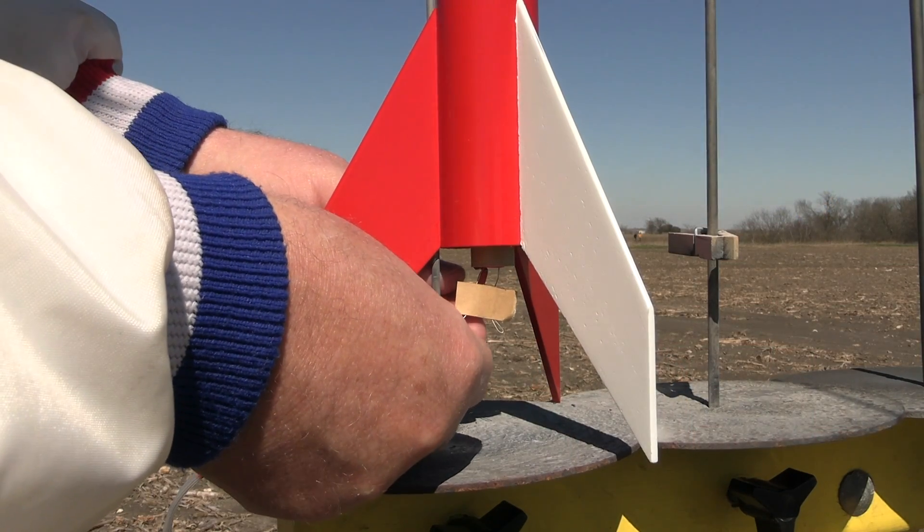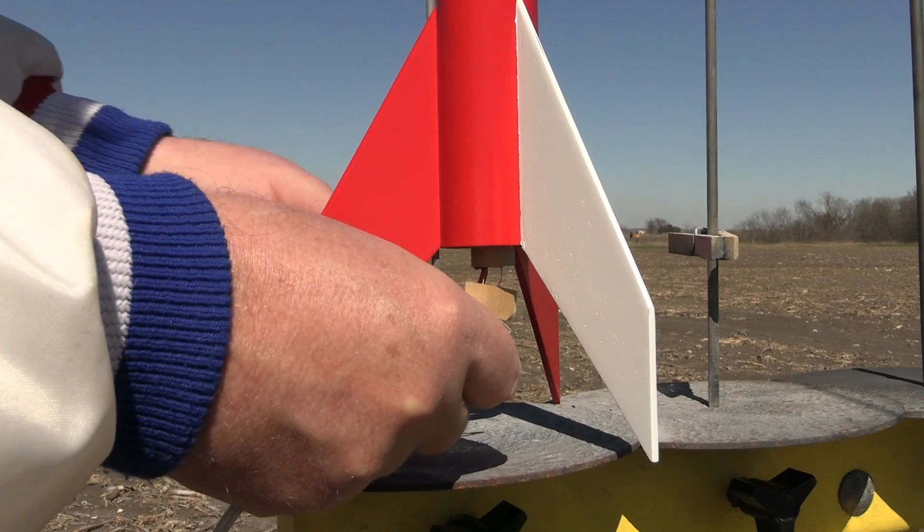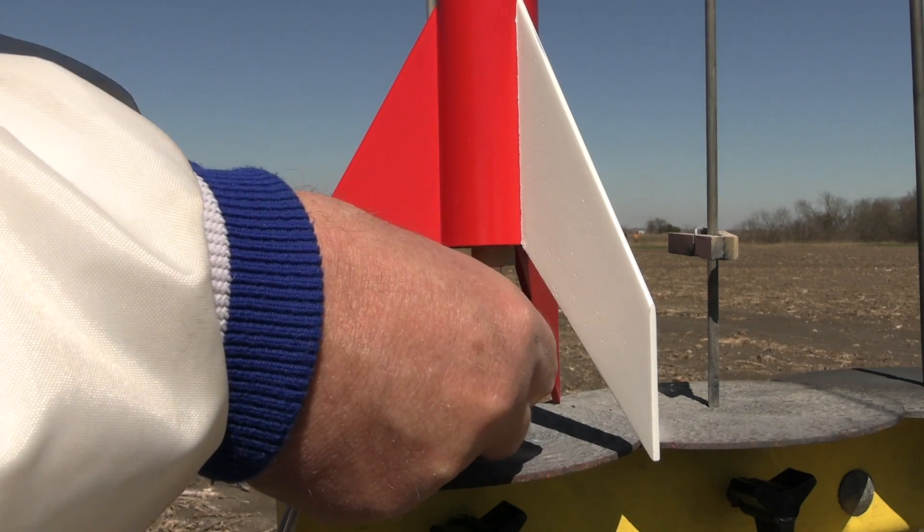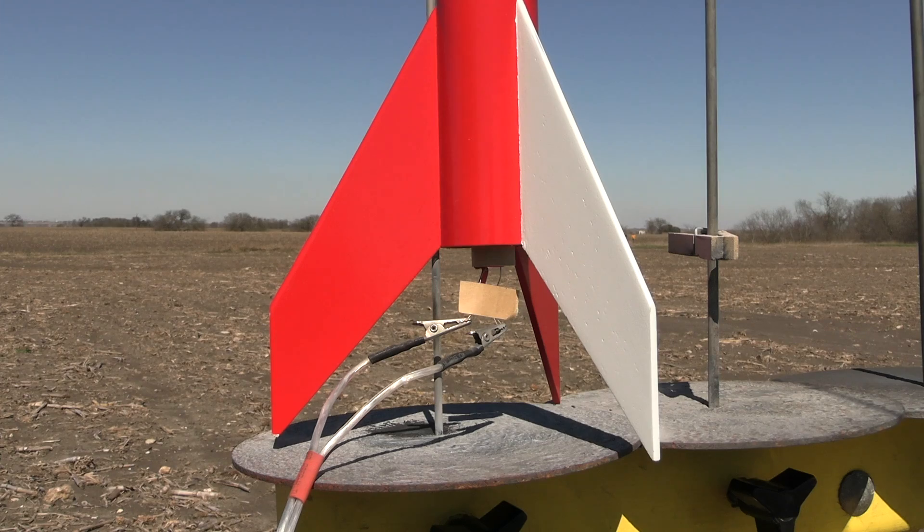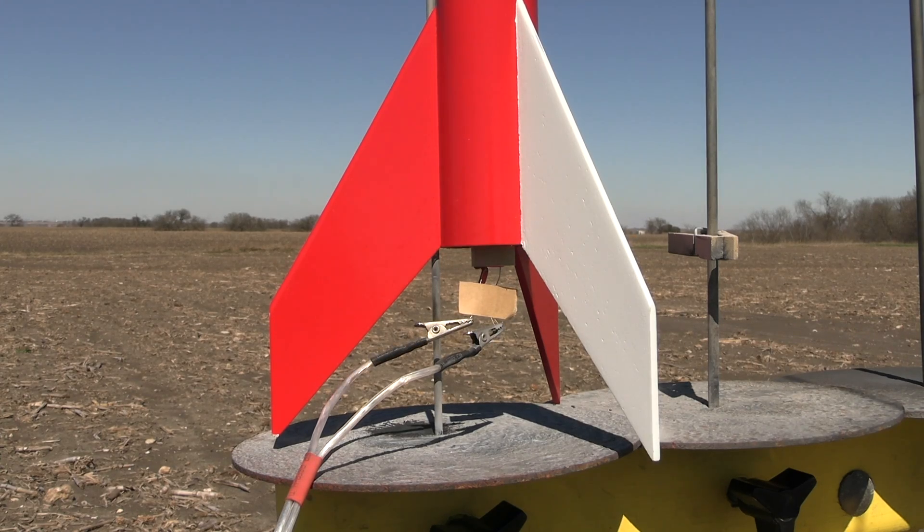Place the rocket on the pad, attach a clip to each of the bunny ears that we created, and make sure that the igniter clips are not touching the blast deflector or the launch rod. We're ready to fly.